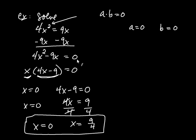So remember our strategy. Get zero on the right-hand side whenever you see something squared or cubed or higher than just simply X to the first power.